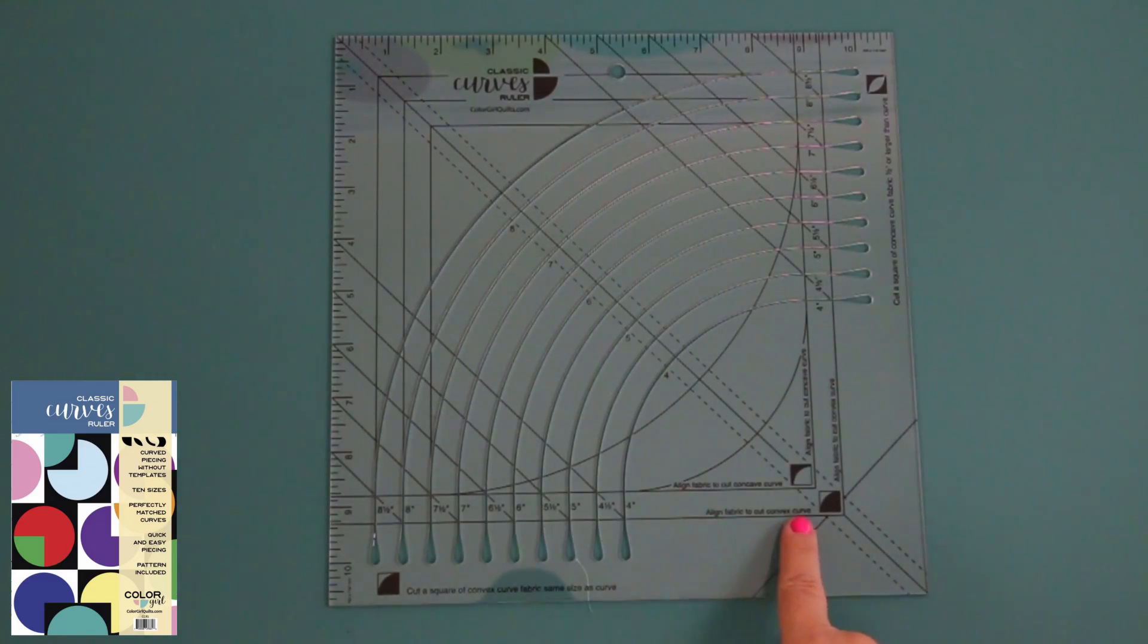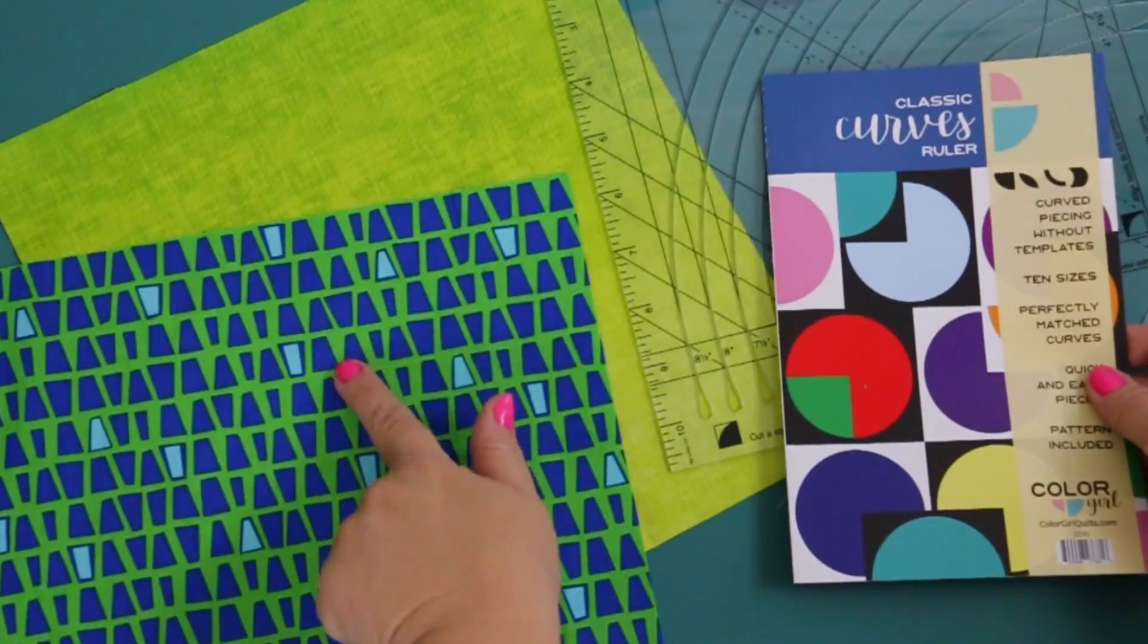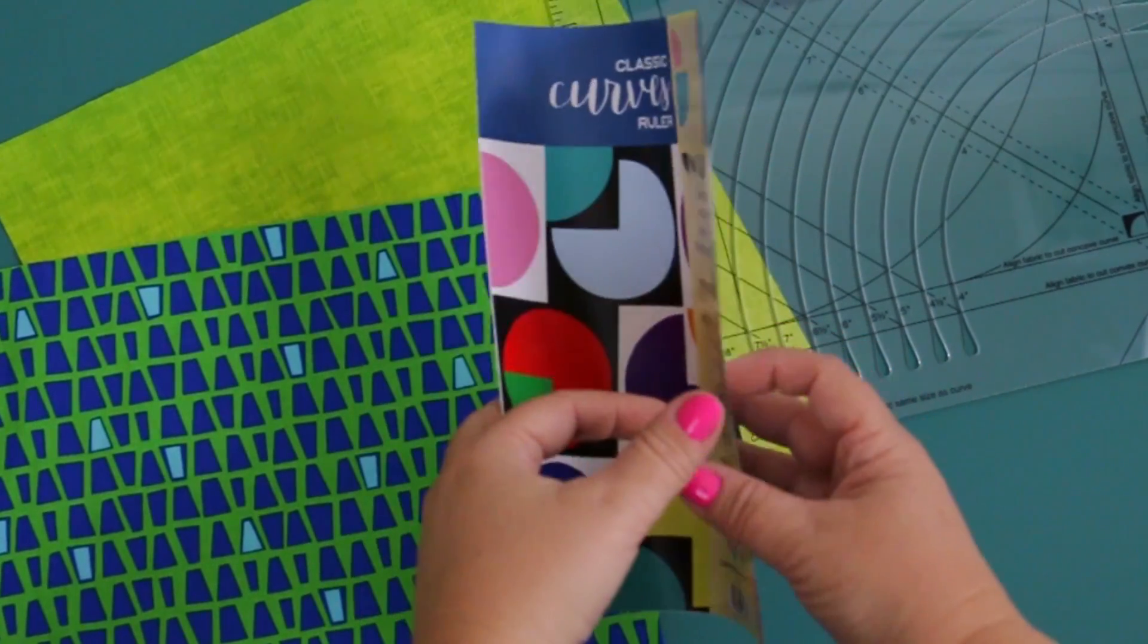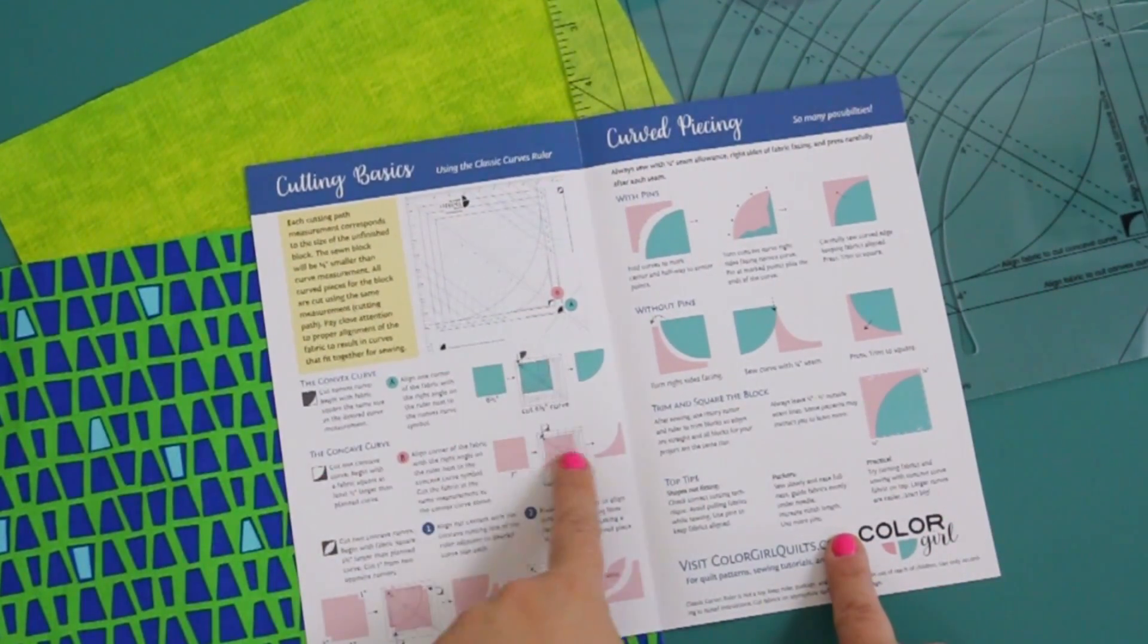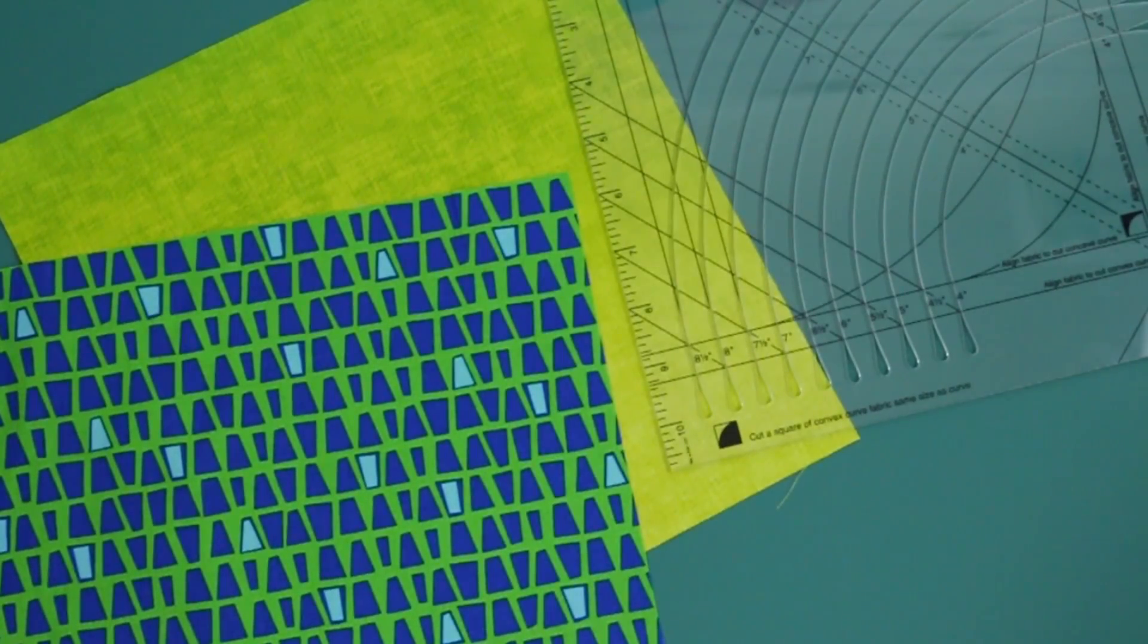There's two little squares in the bottom which both have lines aligning with it. One is the convex curve, and the other is the concave curve. For demonstration purposes, I'm using two different materials, and you're absolutely going to need your instructions. The first one we're going to do is the convex, and the next is the concave.